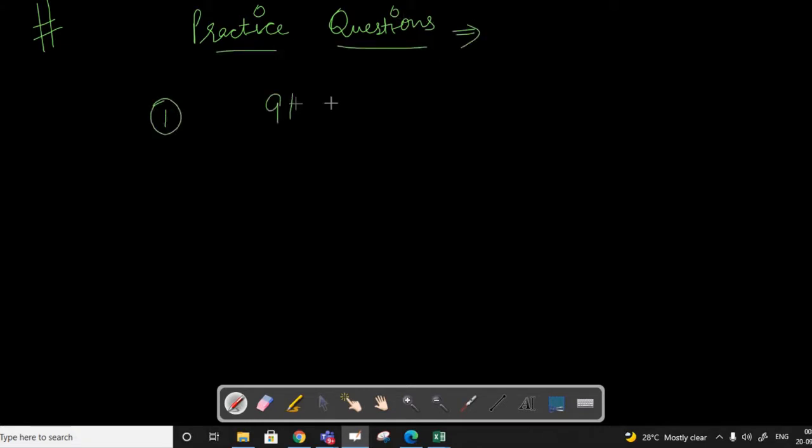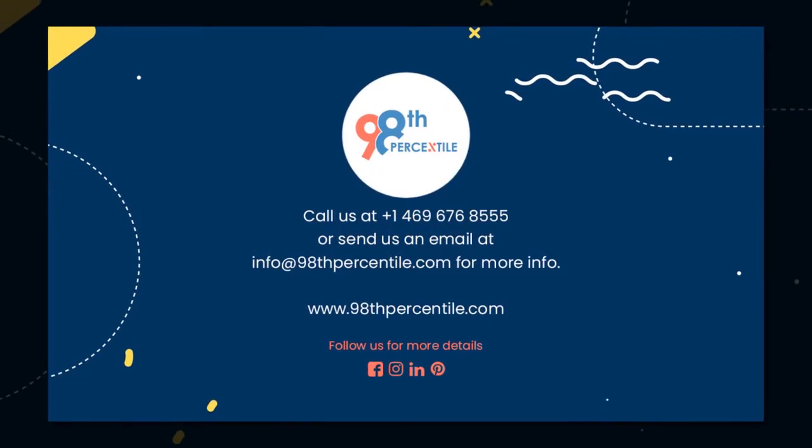Now let's have some practice of the questions. I hope you find these short tricks quite interesting. Let's multiply 91 times 97, 99 times 96, and 94 times 98. Thank you.